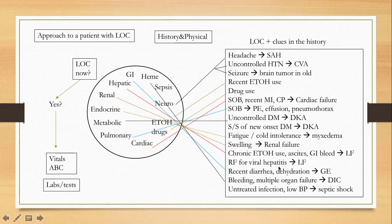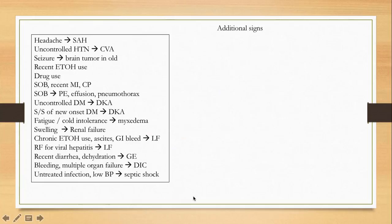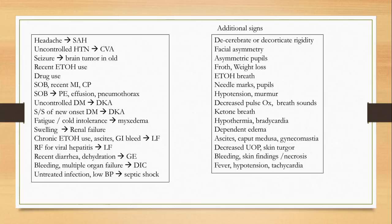There are additional signs to look for on physical exam. In cases of uncontrolled hypertension, headache, or suspected cerebrovascular accident, you may notice decerebrate or decorticate rigidity if the patient is comatose, facial asymmetry, or asymmetric pupils — these are physical exam signs indicating a neurological cause of loss of consciousness.